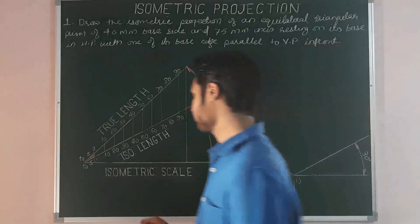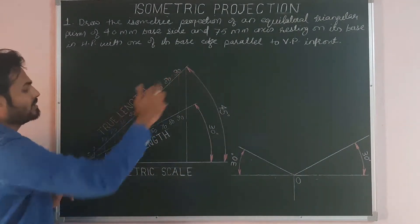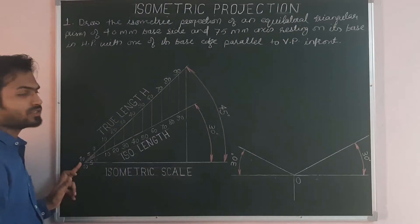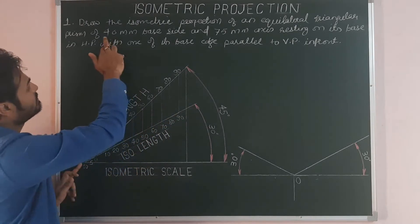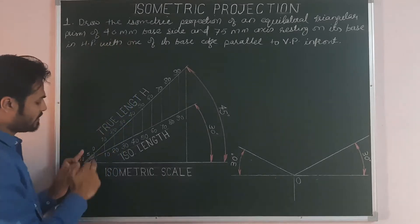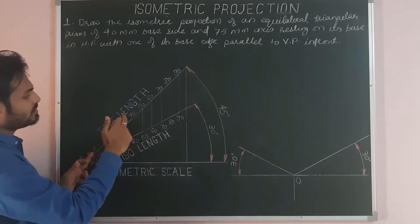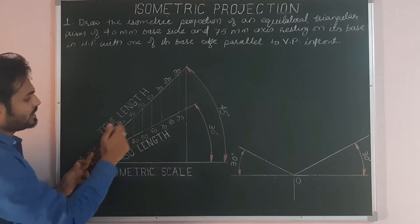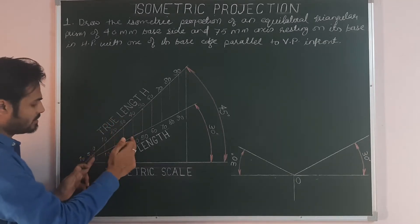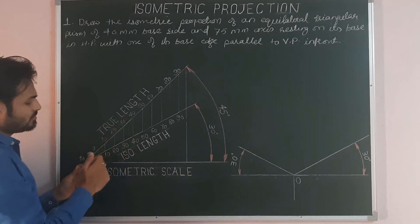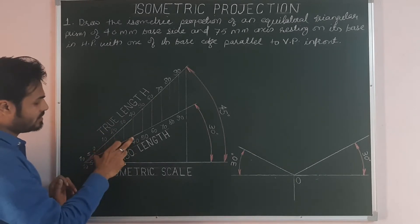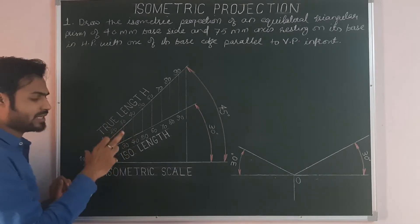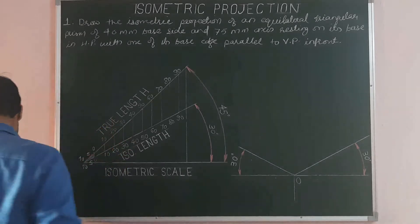Here on the isometric scale, the first line shows true length and the second line shows isometric length. The given side is 40. From 0 to 40 along true length, this line shows true 40. The corresponding second line, from 0 to 40 along iso-length, gives the isometric of 40 — simply iso-40. This iso-40 length is to be taken for the triangle.